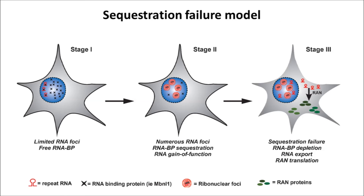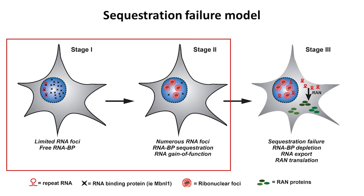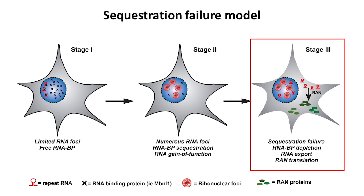Our overall model is that early on in the disease you have RNA gain-of-function problems and nuclear sequestration by MBNL, and then over time, when the expansion gets longer or there's more RNA, the RNA in the nucleoplasm that gets out into the cytoplasm undergoes RAN translation and causes toxicity to cells.